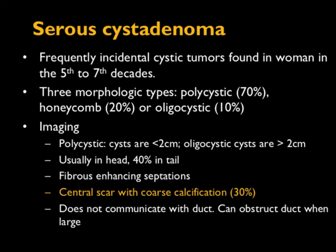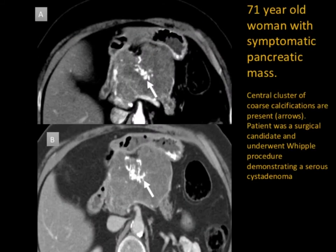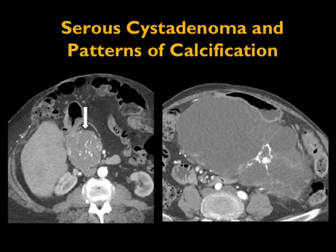A lesion we commonly associate with calcification is serous cystadenoma, usually an incidental finding. Polycystic is the most common form; oligocystic is the least common. Cysts are usually under 2 cm, typically in the head but can occur in the tail. Septations with a central scar are not uncommon, with coarse calcifications in 30% of cases. Here's a nice example: large cystic lesion, central coarse calcifications, mass effect, typically no duct obstruction — serous cystadenoma.